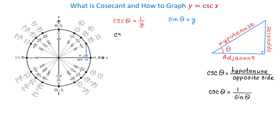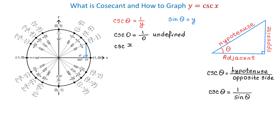We will start with cosecant of 0. We need 1 divided by y, and at 0, the y-coordinate is also 0. Then we will have 1 divided by 0, which is undefined. So right from the first example, we see that the cosecant function is not always defined for all angles. Let's continue with cosecant of pi over 6. To find the value at this angle, we will divide 1 by 1/2. And 1 divided by 1/2 is the same as 1 times 2 over 1, which makes 2.